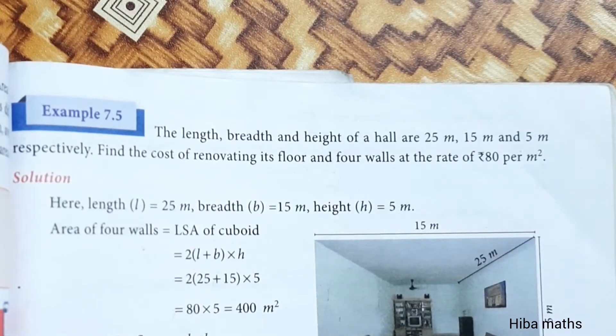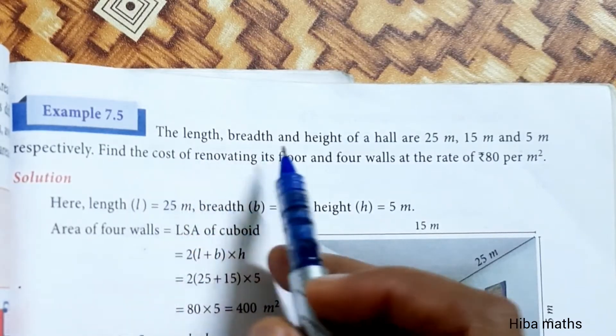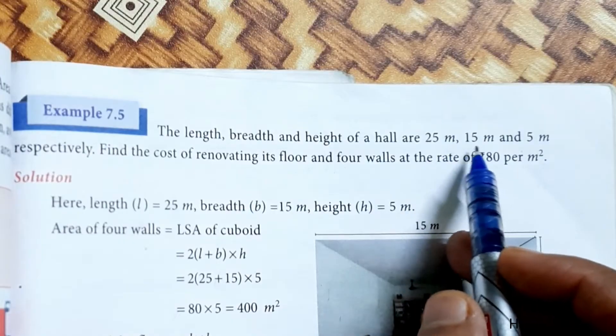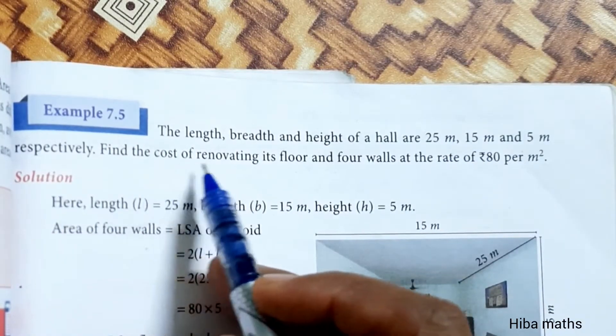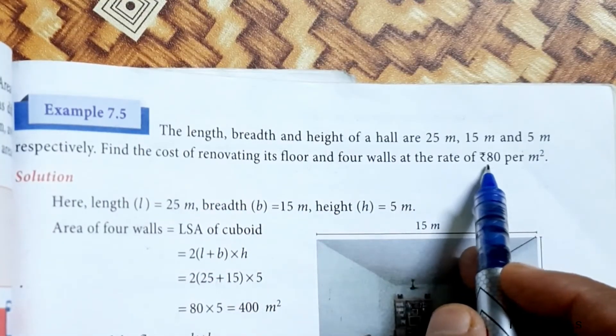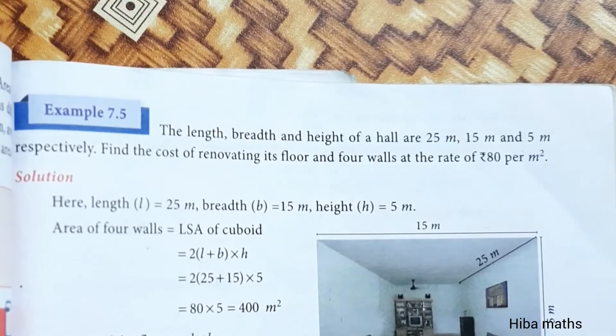Hello students, welcome to Hiba Maths, 9th standard Maths chapter 7, example 7.5. The length, breadth and height of a hall are 25 meter, 15 meter and 5 meter respectively. Find the cost of renovating its floor and four walls at the rate of 80 rupees per meter square.